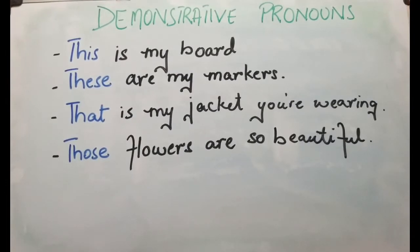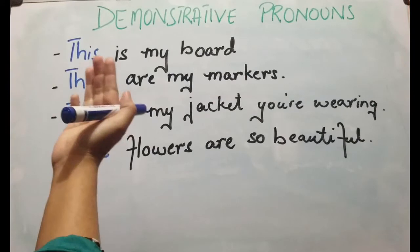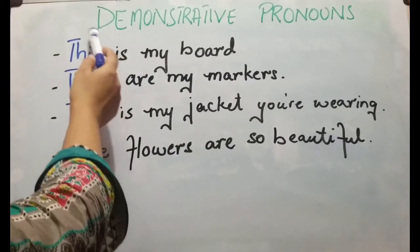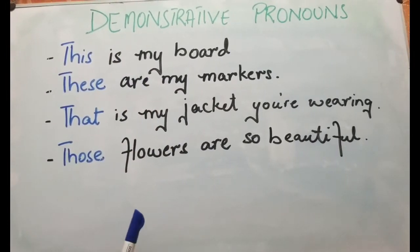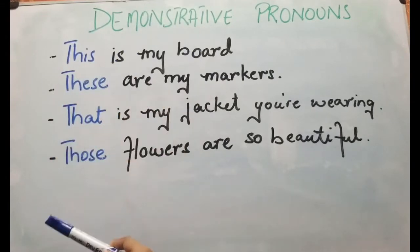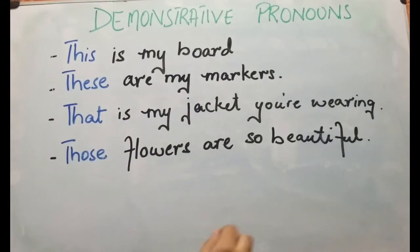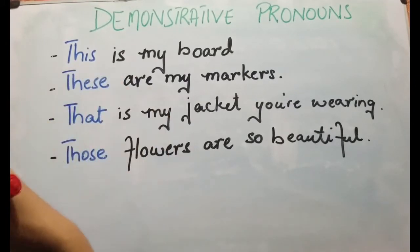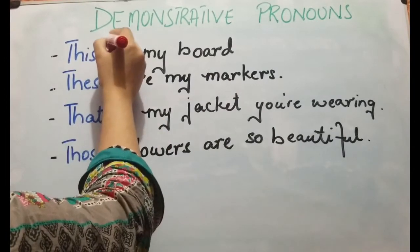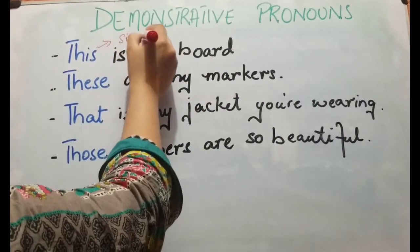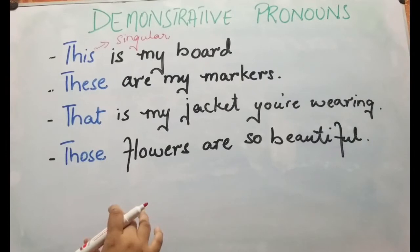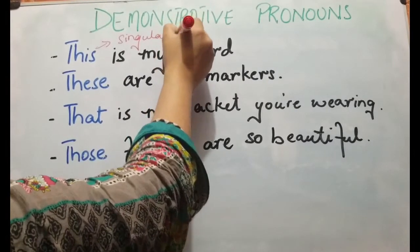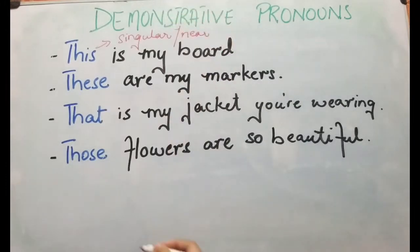To avoid repetition, we use 'this,' 'these,' 'that,' and 'those.' These are the main ones and they are basically known as demonstrative pronouns. The very first example: 'This is my board.' This indicates two things — first, 'this' is singular, and second, since I'm saying 'this is my board,' it means the object is near.